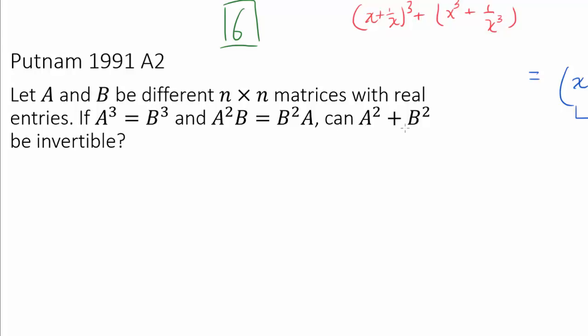And it seems plausible that we want to connect this A squared plus B squared with A squared B, B squared A, and A cubed B cubed. And thinking along that line, we realize that when we multiply by A to the right of A squared, we get A cubed. And when we multiply by A to right of B squared, we get B squared A. And similarly, if we multiply by B to the right of A squared, we get A squared B.